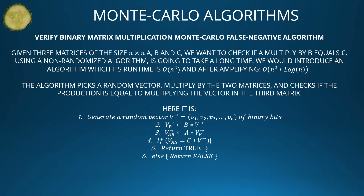Verify binary matrix multiplication — a Monte Carlo false negative algorithm. Given three n×n matrices A, B, and C, we want to check if A multiplied by B equals C. Using a naive algorithm would take a long time. We introduce an algorithm with runtime O(n²), and after amplifying, O(n² · log n). The algorithm picks a random vector, multiplies it by the two matrices, and checks if the result equals multiplying the vector by the third matrix.